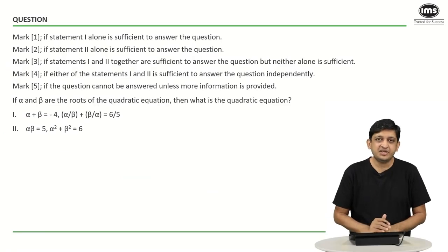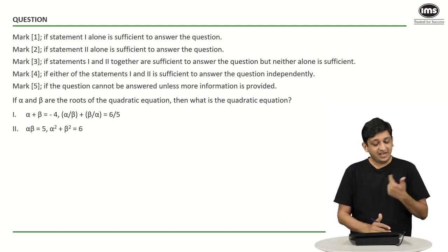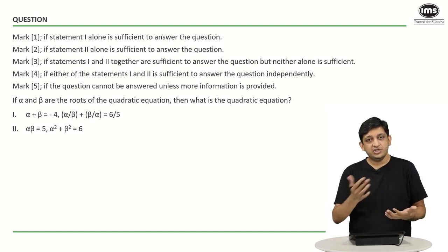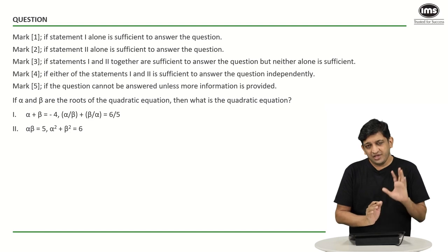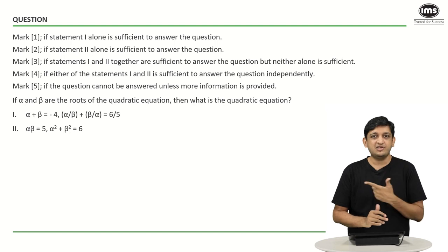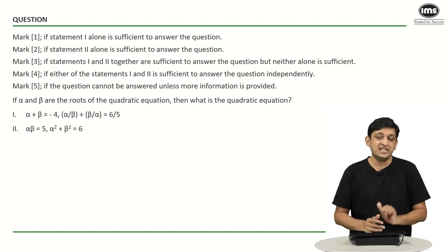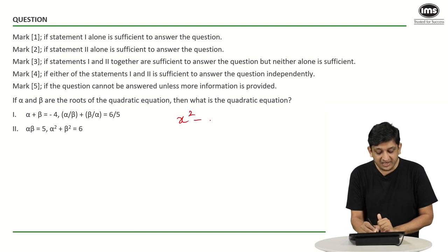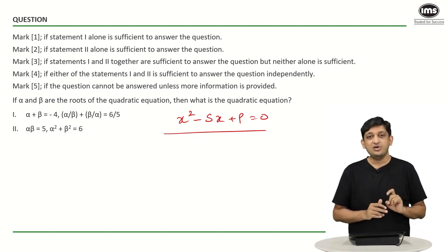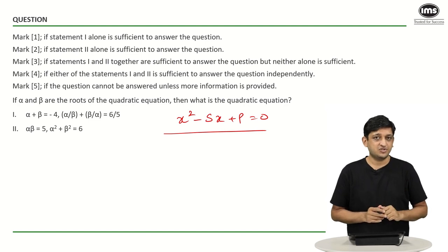The third question is a data sufficiency question — these are generally slightly tricky. Alpha and beta are the roots of some quadratic equation, and we have to determine which statements are sufficient to find the equation. The key formula is: x squared minus (sum of roots)x plus (product of roots) equals 0. To identify the equation uniquely, we need to know both the sum and the product of the roots.